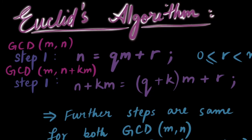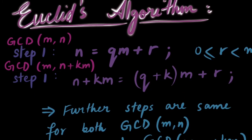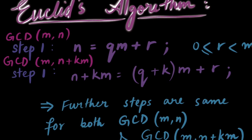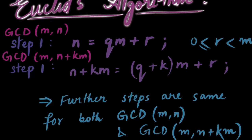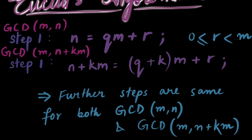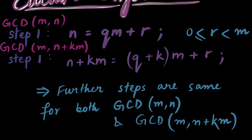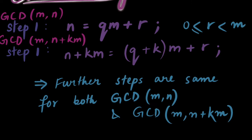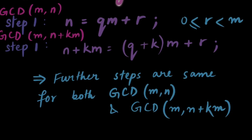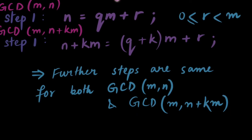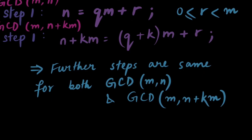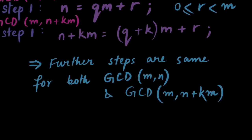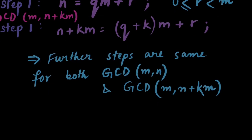In Euclid's algorithm, we see that in the first step for the GCD calculation of M and N, we get R as the remainder upon dividing N by M. First step for GCD calculation of M and N plus KM also gives us the same remainder R. Thus, in both the cases, the second step and consequently all succeeding division steps are exactly the same. This completes the proof.